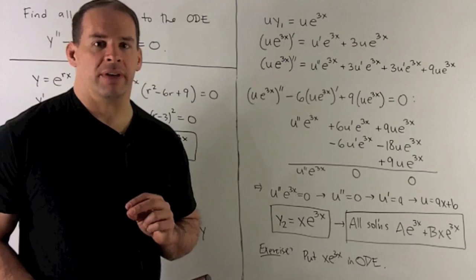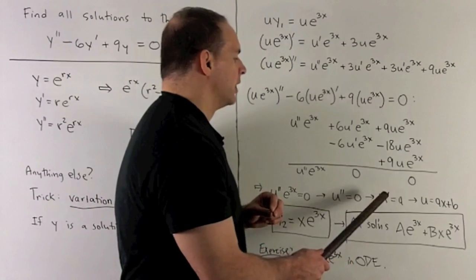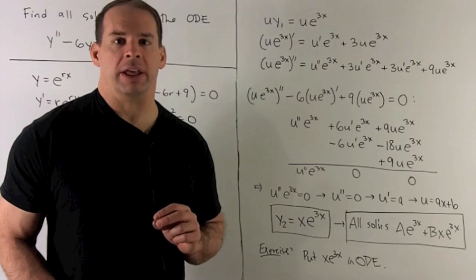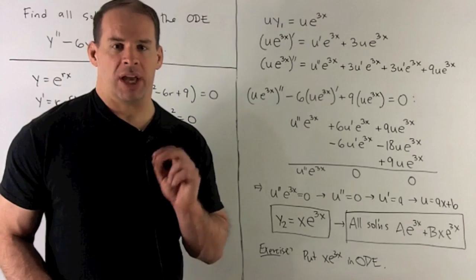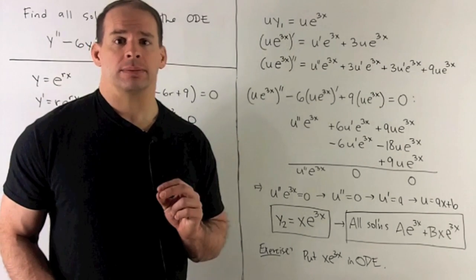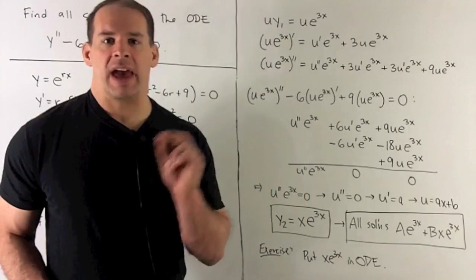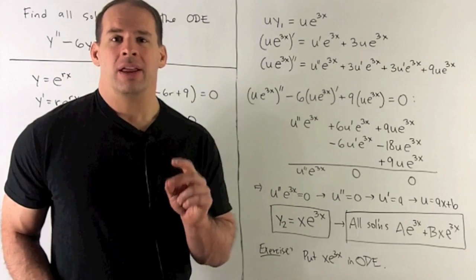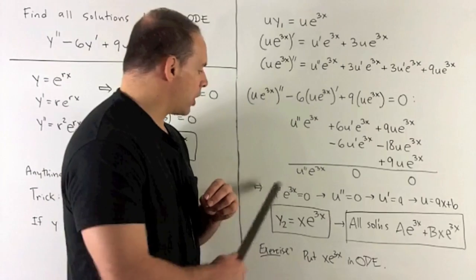So if I take two antiderivatives, first one is going to give me the constant a. Second one, the a is going to pick up an x, and then we throw in another constant b. So u is equal to ax plus b. Let's check what we have. We're going to multiply this by e to the 3x. Constant b times e to the 3x, we've already accounted for that with y1. So we're really interested in the solution x e to the 3x. So I'll call that y2.